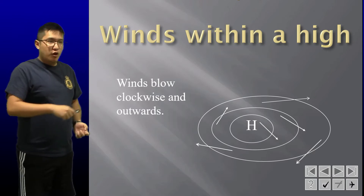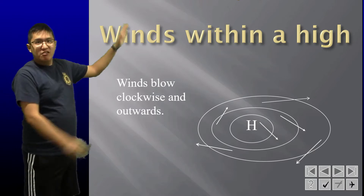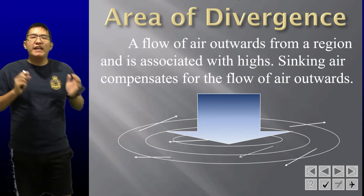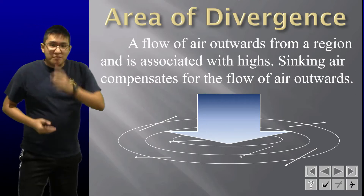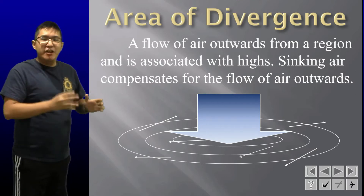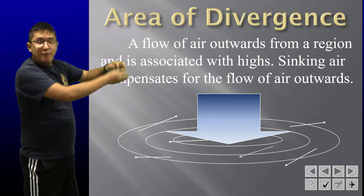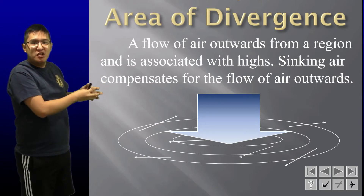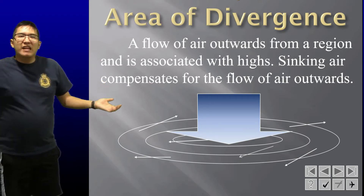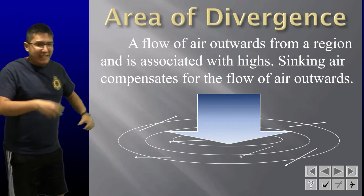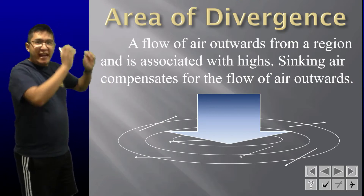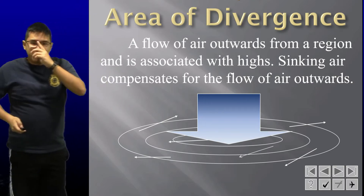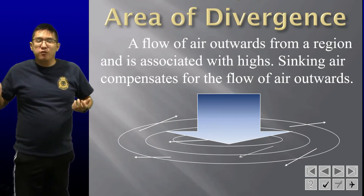Remember winds within a high will flow clockwise and outwards. So this is where we have what we call an area of divergence. As the air within the high blows outwards, there's suddenly a hole in the center of the high pressure system. The atmosphere doesn't like to have holes in it, so in order to compensate, the air on top is going to sink down into place and cover the hole. This will compensate for the flow of air outwards.